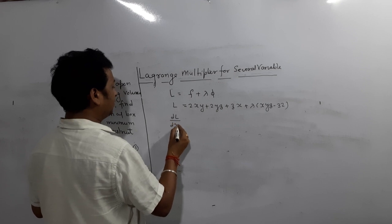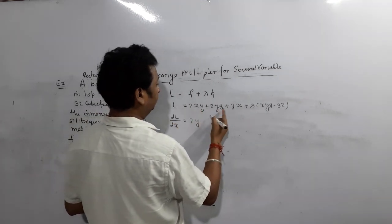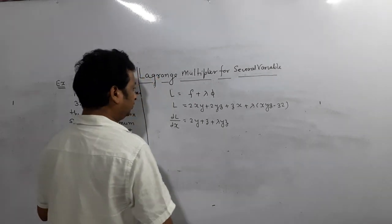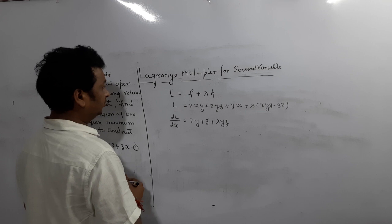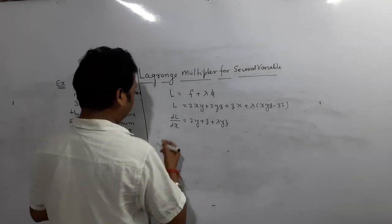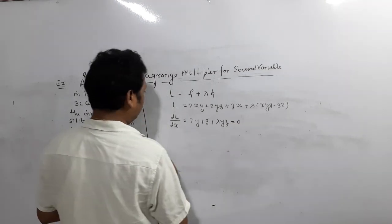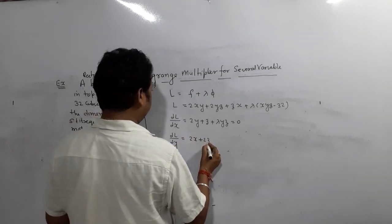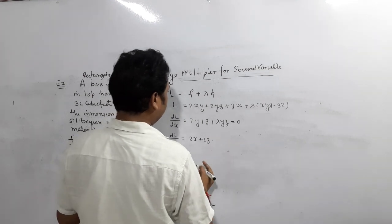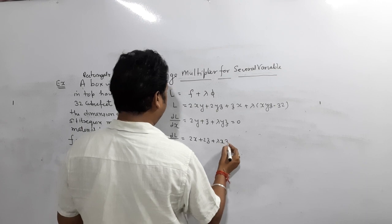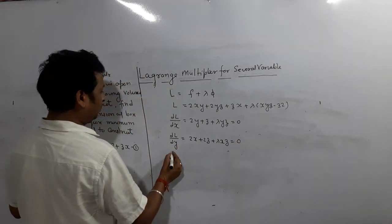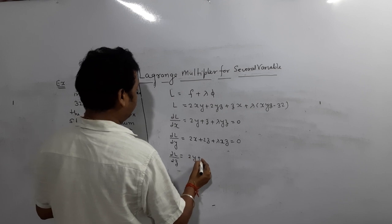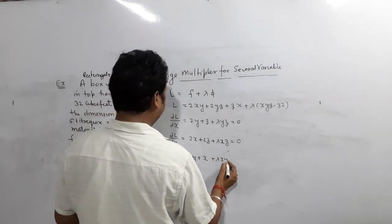Now compute the partial derivatives. del L / del x = 2y + z + lambda*yz = 0. del L / del y = 2x + 2z + lambda*xz = 0. del L / del z = 2y + x + lambda*xy = 0.